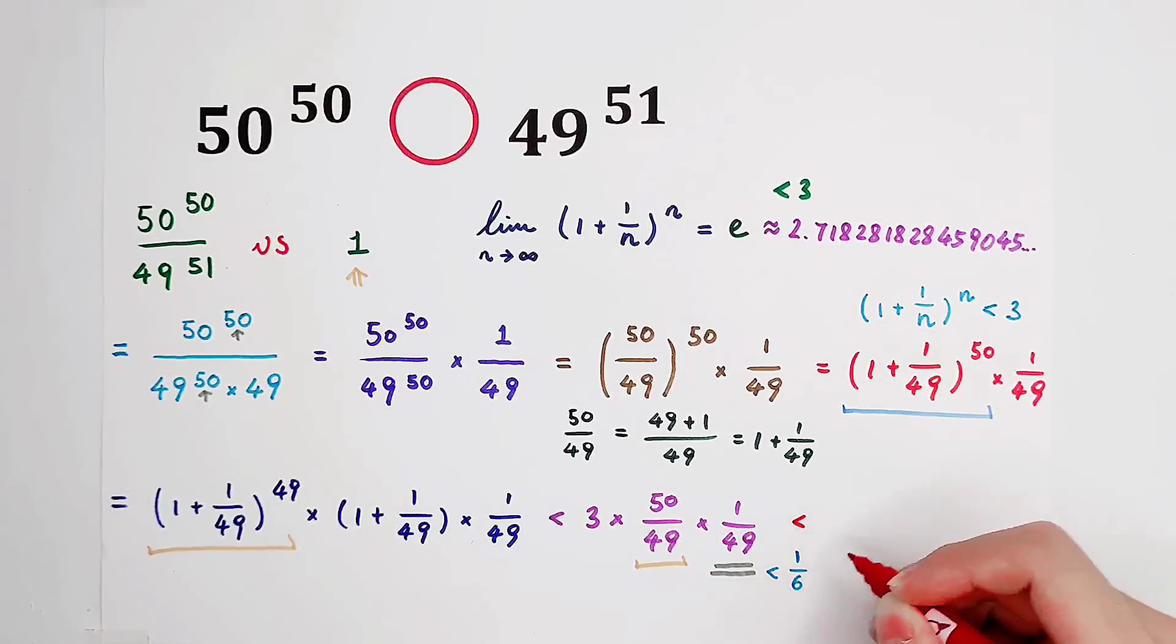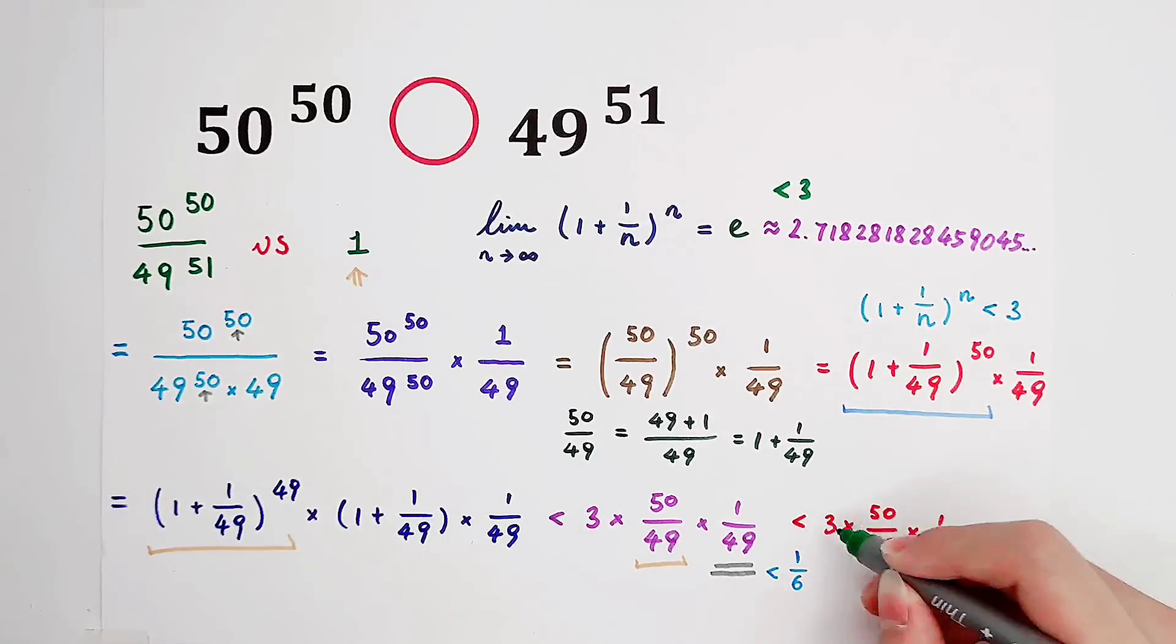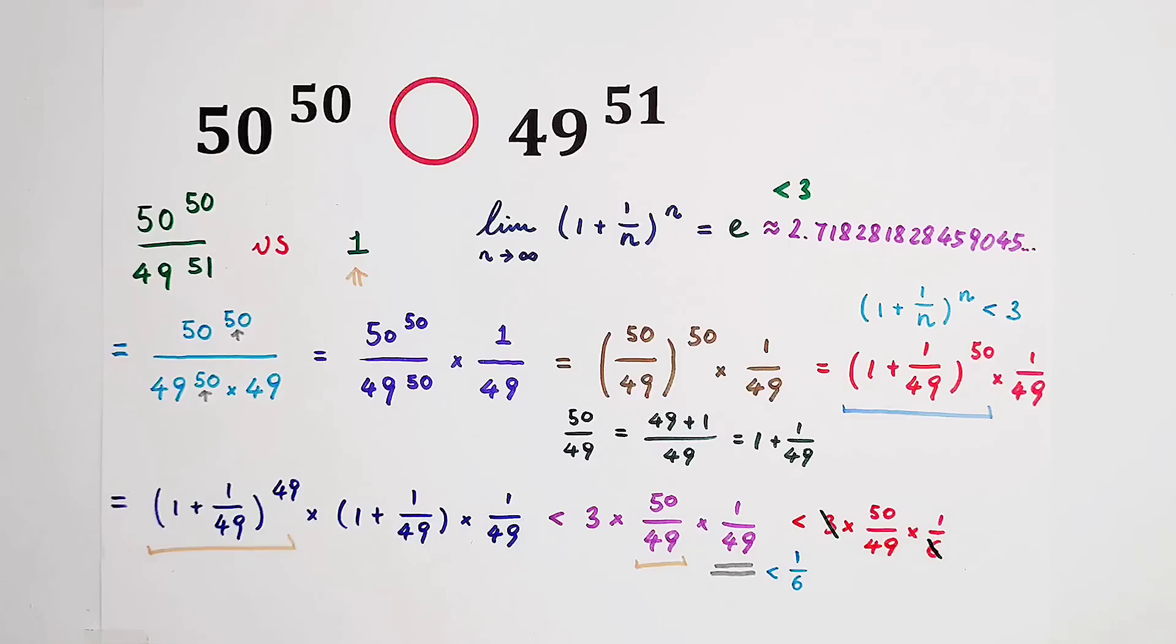In the end, it is smaller than 3 times 50 over 49 times 1 over 6. And here you can see, 3 and 6 cancel. So the answer is 2. 2 times 49 is the denominator, and the numerator is 50. This answer, 50 over 2 times 49, equals 50 over 98. So the answer is of course smaller than 1.